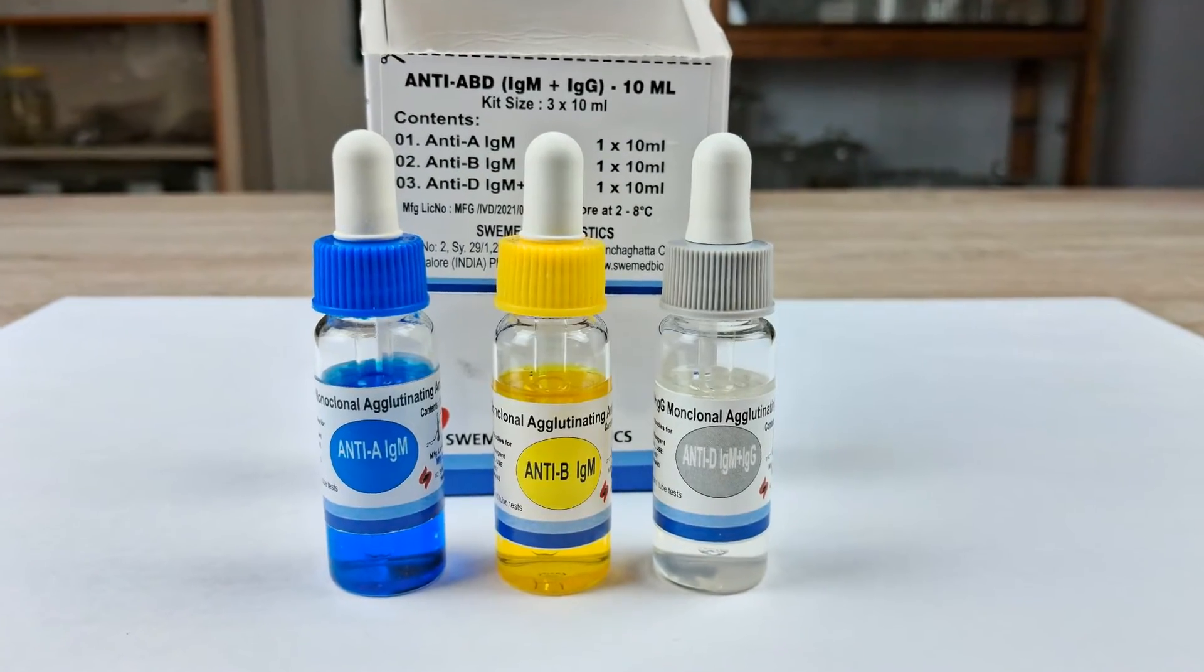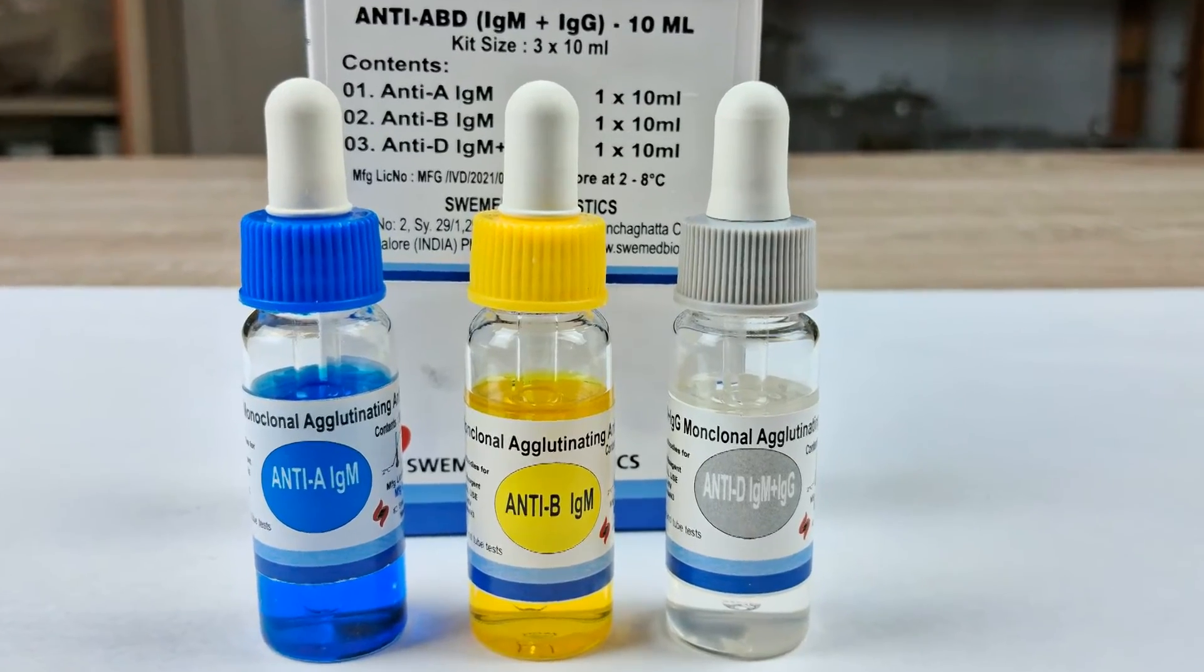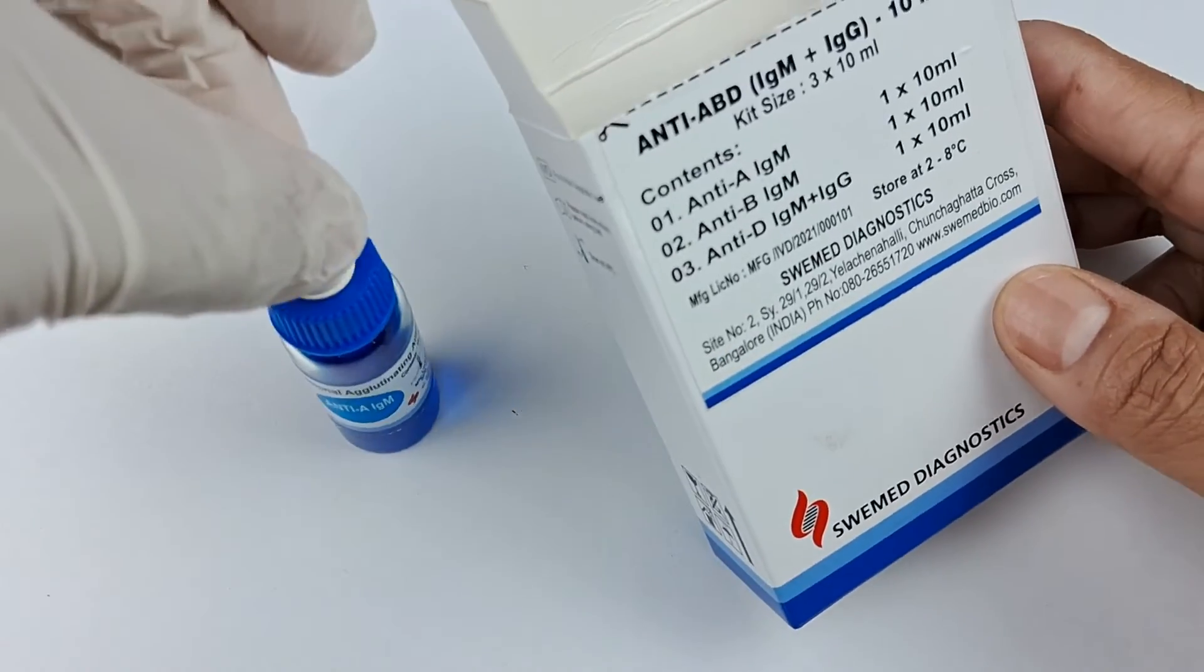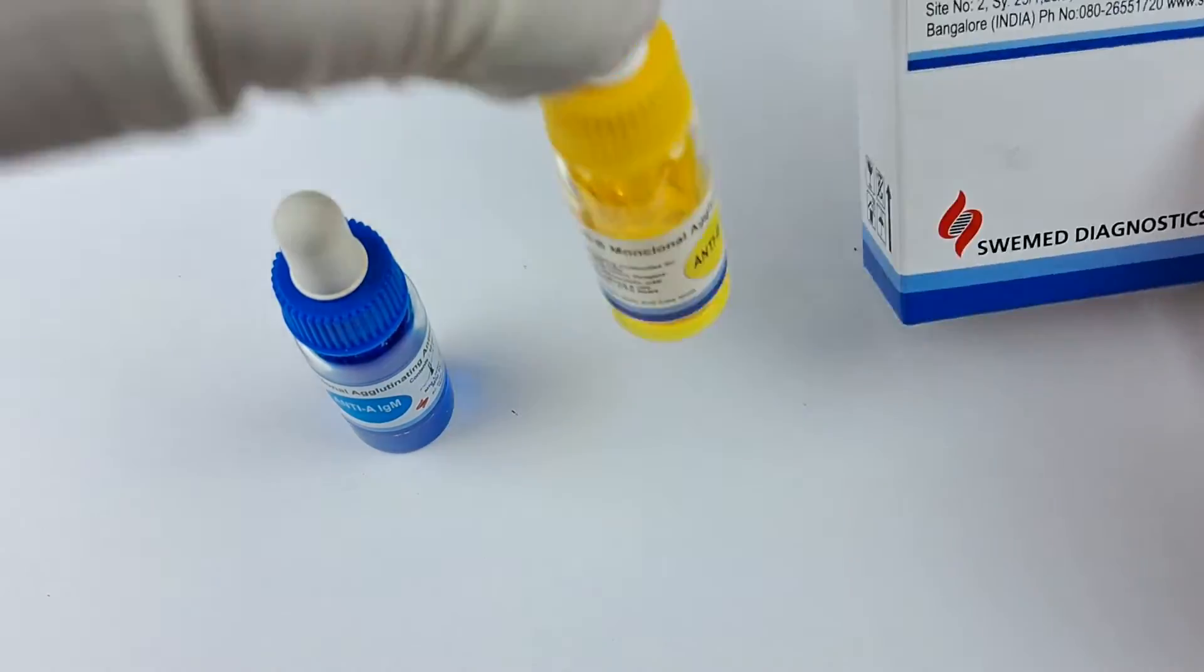ABO blood grouping test kit consisting of antisera A, B, and D antibody vials. To begin the test, first remove the ABO blood grouping test kit from the refrigerator.